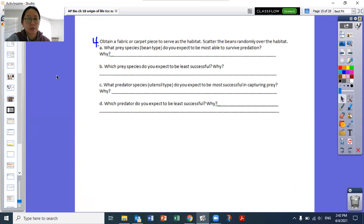Now we're coming back to the question from before, and this one has a part A, B, C, D, which is kind of related to what we said before. So if we were doing a lab, we would be scattering the beans around the little piece of carpet. And then you're answering what prey species do you think would be most able to survive predation and why? Which prey species do you expect to be least successful and why? What is the reasoning behind you picking that prey species as least successful?